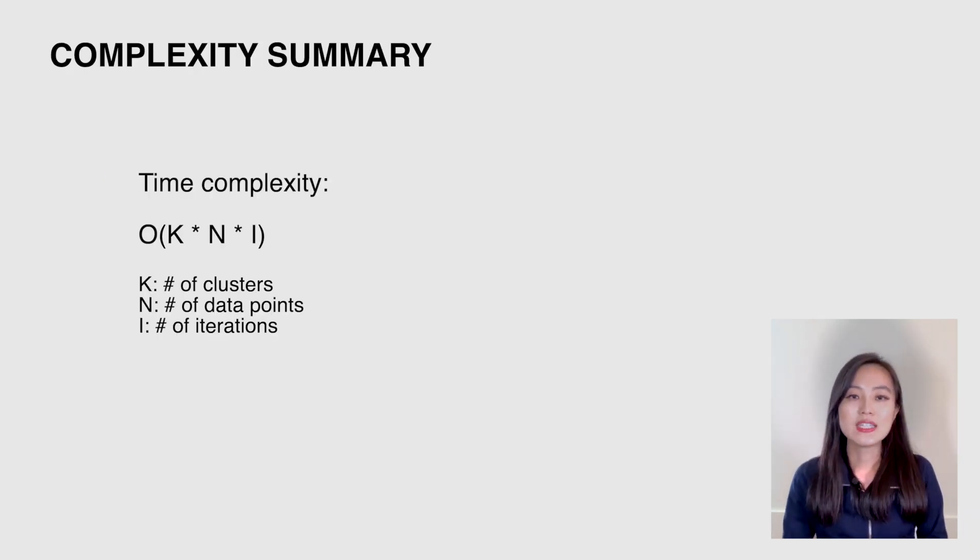To recap, the time complexity is O(k × n × i), where k is the number of clusters, n is the number of points, and i is the number of iterations in the main function. And the space complexity is O(n).